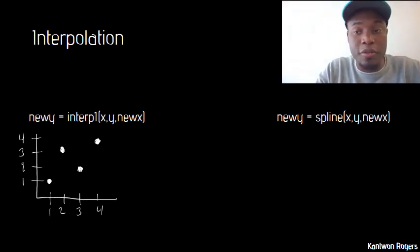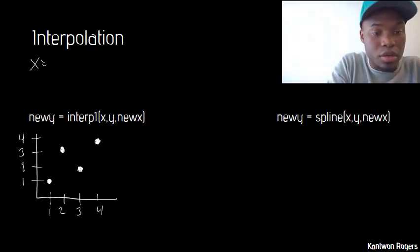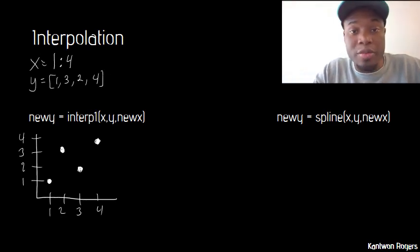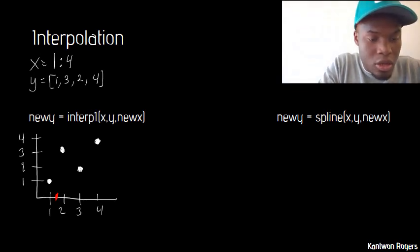So interp1 — notice by its inputs — the first input is our x values, the second input is our y values, and the third input is the new x values that we want to guess. So in this case my x values would be a vector from 1 to 4, and my y's would be 1, 3, 2, 4. Now let's say I wanted to guess the y values for x at 1.5, 2.5, and 3.